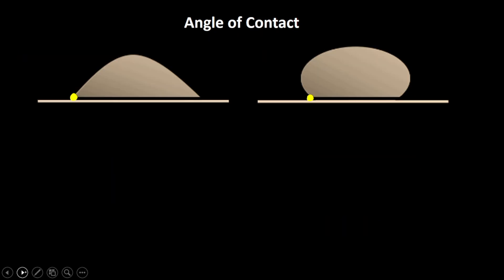Now let's understand the angle of contact in more detail. Imagine a molecule at this particular edge and let's find the interfacial tensions on it. This molecule is attracted by the solid molecules, giving an interfacial tension S_LS along the liquid-solid interface. It also faces interfacial tension S_LA from the liquid-air interface, and S_SA from the solid-air interface.